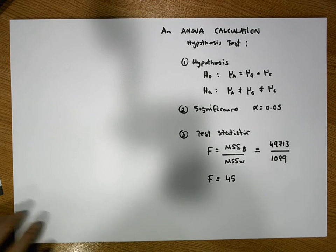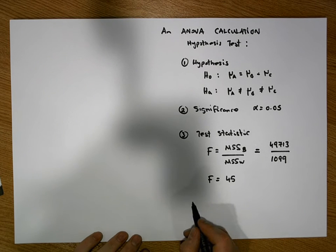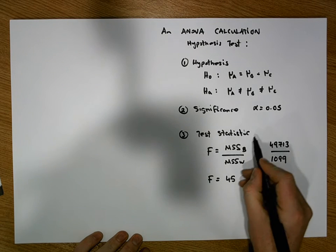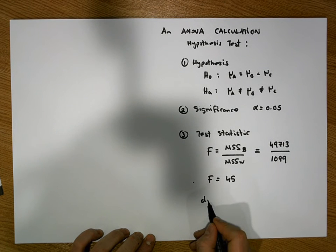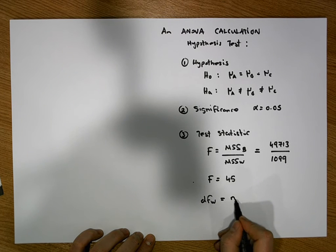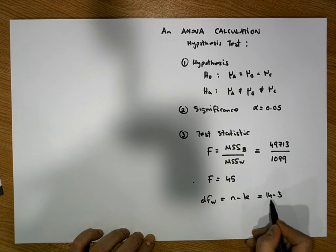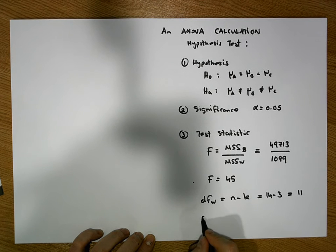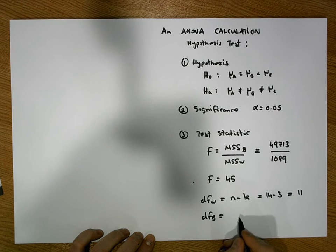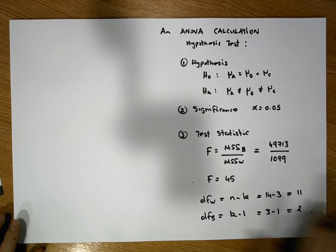We also need to consider the degrees of freedom associated with the test. There are two: the degrees of freedom for the numerator and the denominator. The degrees of freedom within is defined as n minus k — the number of observations minus the number of groups — that's 14 minus 3, giving degrees of freedom within equal to 11. The degrees of freedom between is k minus 1, which is 3 minus 1, giving a value of 2.